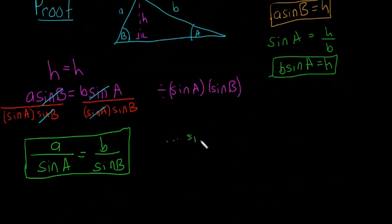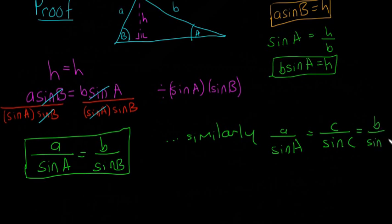And then you can just say, similarly, a over sine of A is equal to c over sine of C. And then you can say is equal to b over sine of B. So you can prove it whichever way you want.